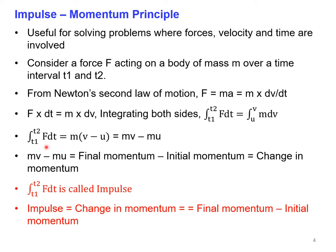So from Newton's second law we have derived the impulse-momentum equation: impulse = change in momentum = final momentum − initial momentum, i.e., F·t = mv − mu. This equation will be used for solving dynamic equilibrium problems and analyzing the motion of connected bodies.